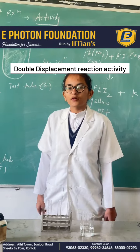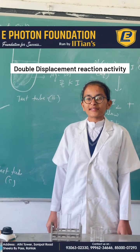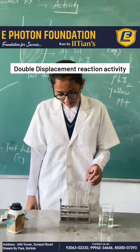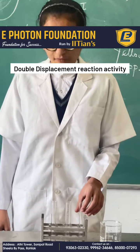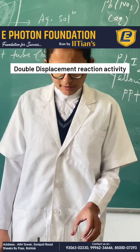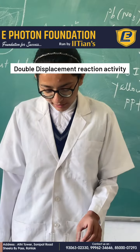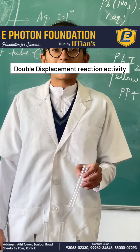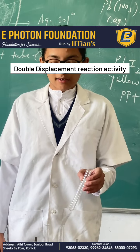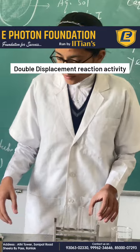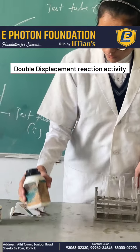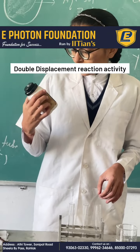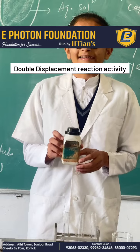So now we are doing this activity. First of all we take 3 test tubes and mark these with A, B, and C. This is test tube A. In it we add some amount of lead nitrate.